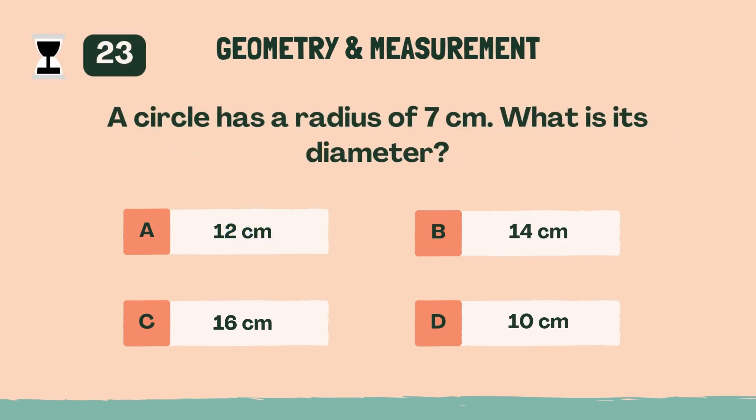A circle has a radius of 7 centimeters. What is its diameter? B, 14 centimeters.